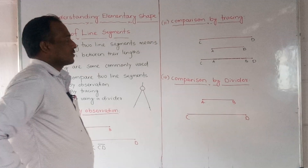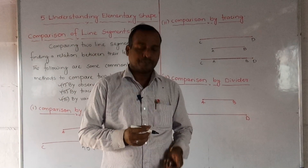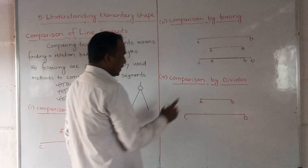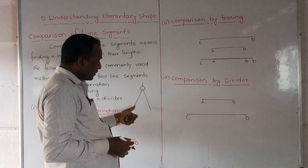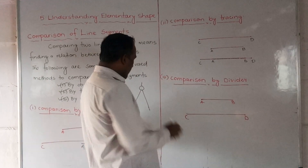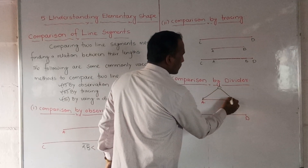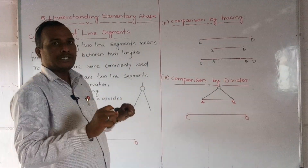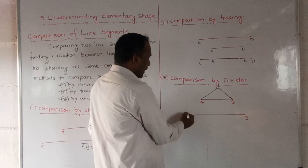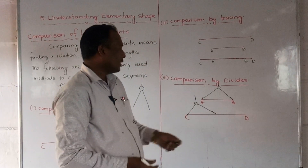The third method is comparison by divider. Very carefully observe: whenever you use a divider, you keep one end of the needle at one end of the line segment, say point A, and extend the other end to point B. Then, without changing the divider, you put one end at C and observe where the other end falls.